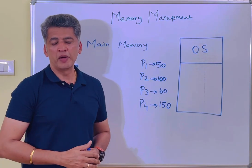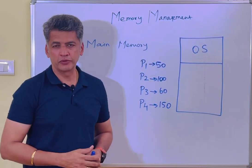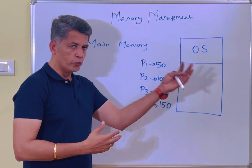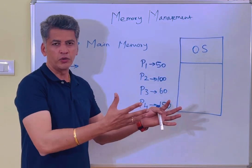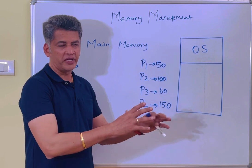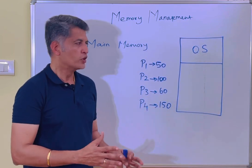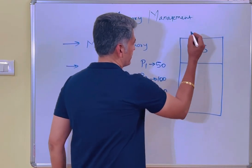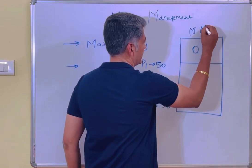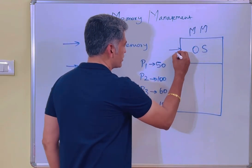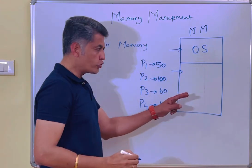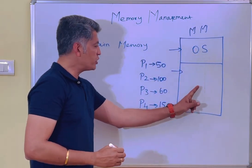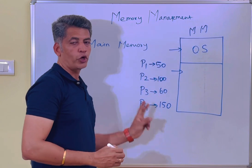Hi everyone, we'll continue the memory management. In the previous video we discussed how the OS is moved from secondary memory to main memory and how the remaining portion is occupied by processes. So this is your main memory — there are two different portions available: one occupied by the operating system, and the remaining portion used for process execution.